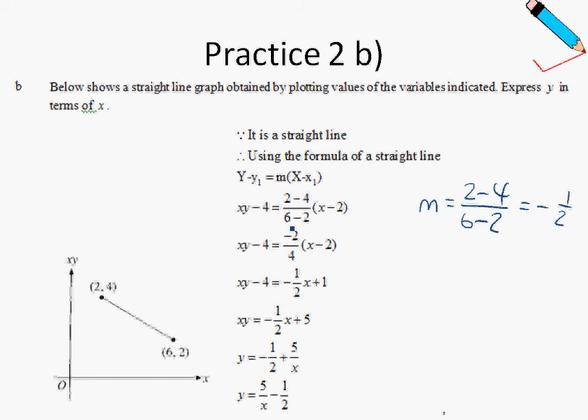So over here, we're looking for the gradient. We found that gradient is negative half. So once again, we're going to sub a point into this equation or this formula. The point that we're using will be 2 comma 4. So you realize that in this case, my y1 is 4, my x1 is 2.